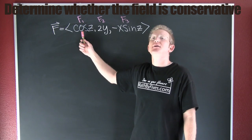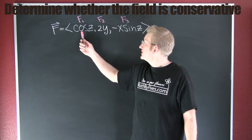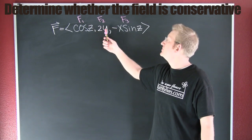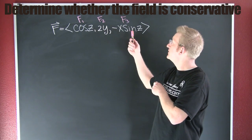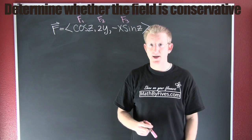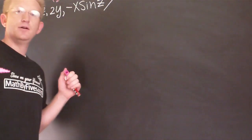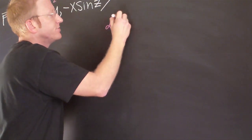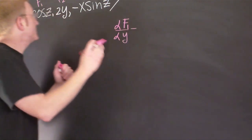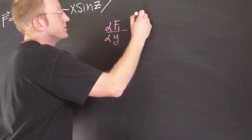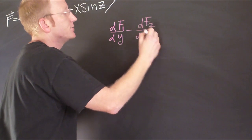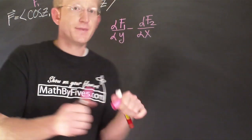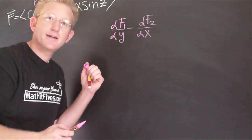We're going to take the second partial of f1 with respect to y and with respect to z, and those should be the same as the second partial of f2 with respect to x and the second partial of f3 with respect to x. I'm looking at the partial of f1 with respect to y, then subtracting off the partial of f2 with respect to x. I'm using the difference here because if two things are equal, the difference should be zero.